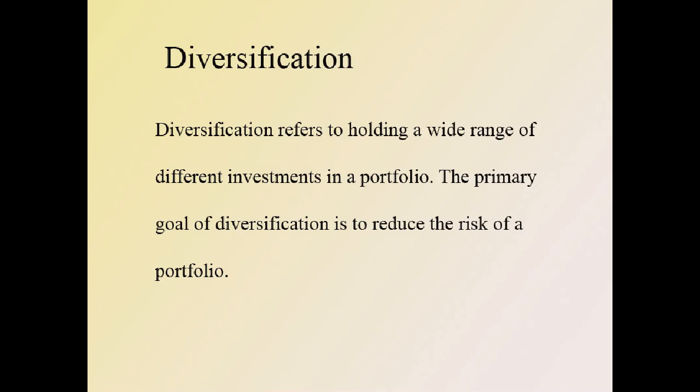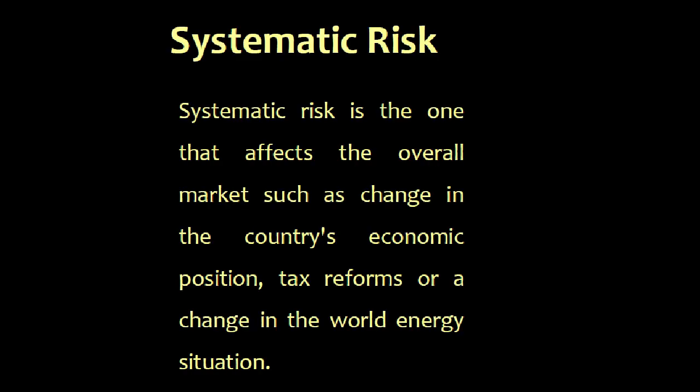The primary goal of diversification is to reduce the risk of a portfolio. Diversification reduces portfolio risk as long as different investments are unlikely to all move in the same direction. It is better to have negatively correlated securities in a portfolio. In smaller portfolios, diversification can cut variability dramatically, though the benefit from diversification tends to decrease as the number of securities increases. Systematic risk is also known as market risk, non-diversifiable risk, or unavoidable risk.